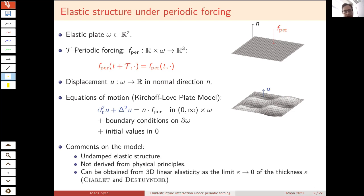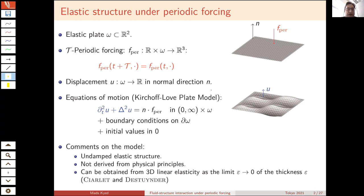The Kirchhoff-Love plate model has DT squared U plus the bilaplacian of U equal to the normal component of the outer force. Only the normal component of the outer force is taken into consideration. In order to obtain a well-posed problem, I need to impose boundary conditions and initial values. A key point: it models an undamped elastic structure — there is no damping mechanism in this model, so periodic forcing can lead to resonance.